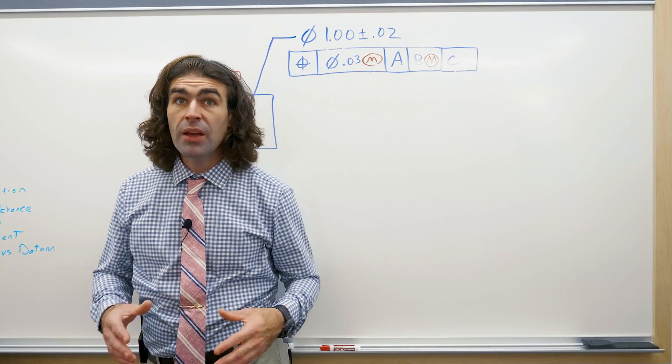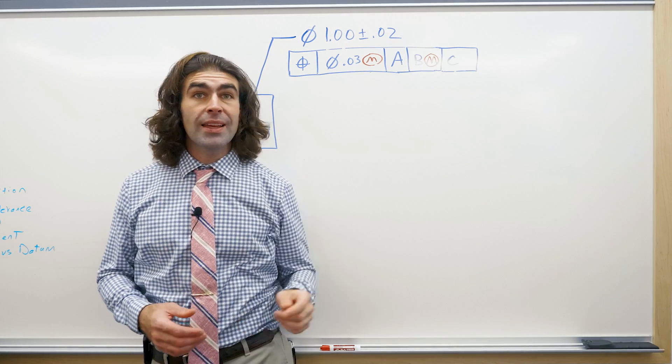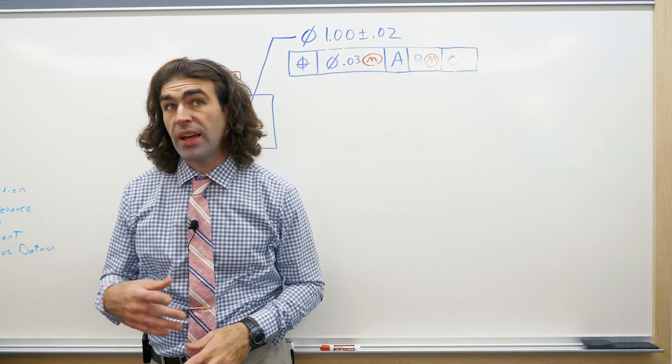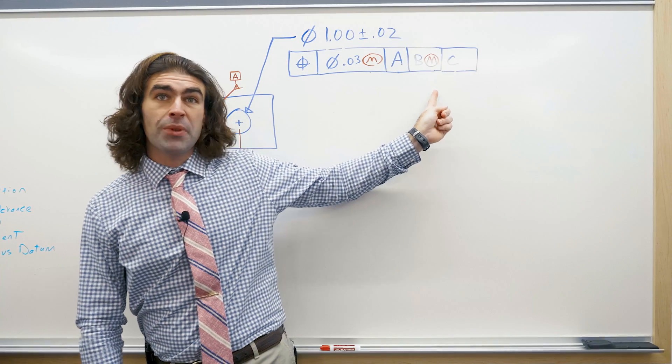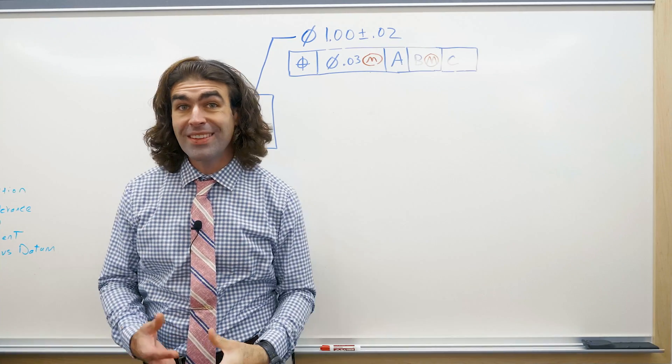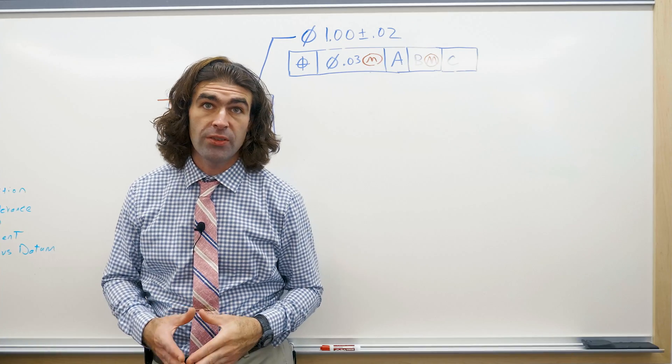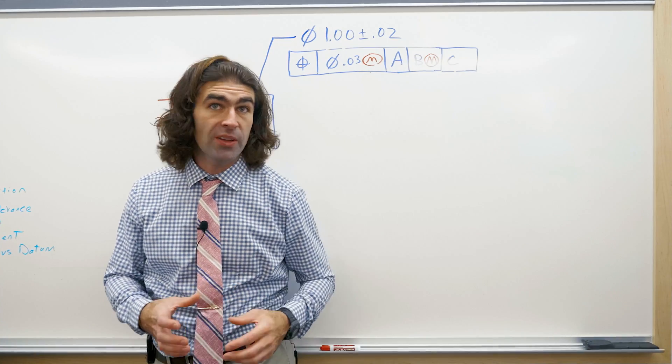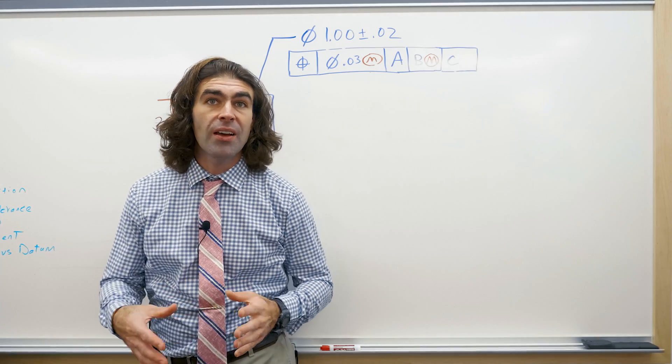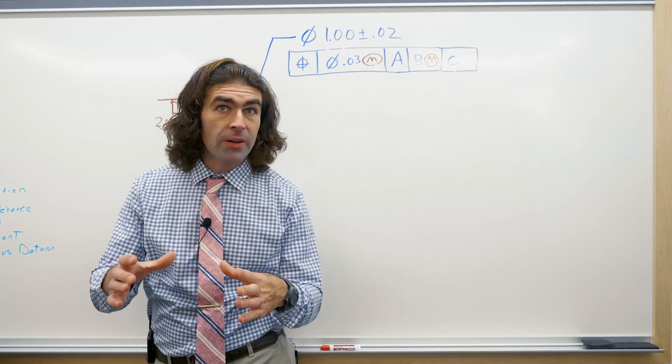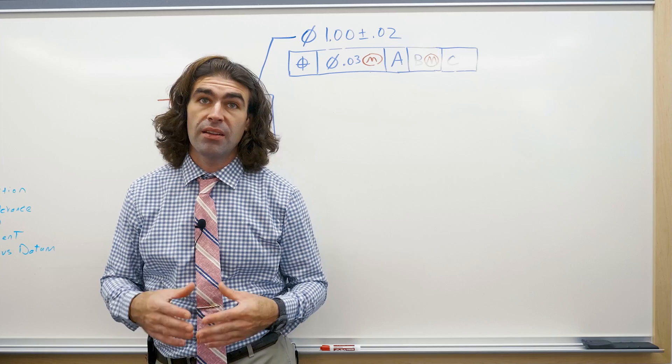Now the MMC symbol with the tolerance right here gives you bonus tolerance, which I have another video about. But over here it gives you something called datum shift, which is different from bonus tolerance. You're not actually getting more tolerance for the feature that this feature control frame is tolerancing. It's just that the part can move around that feature.